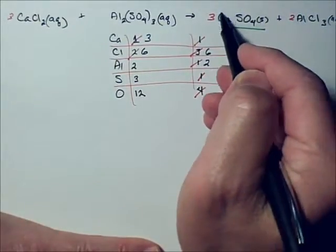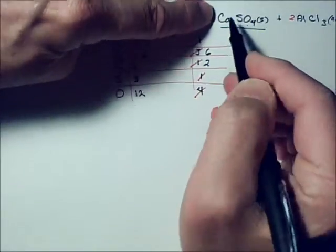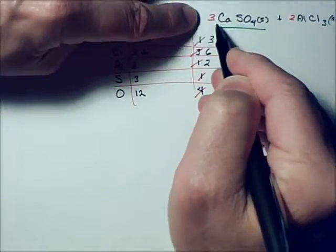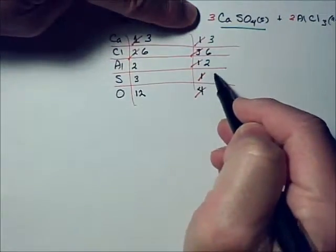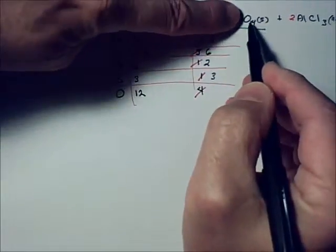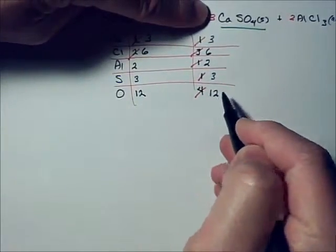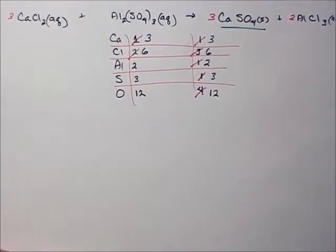Alright, we're going to recount. One calcium in the formula times the three is three. One sulfur in the formula times the three is three sulfurs. Four oxygens in the formula times the three is twelve oxygens. And lo and behold, it's balanced.